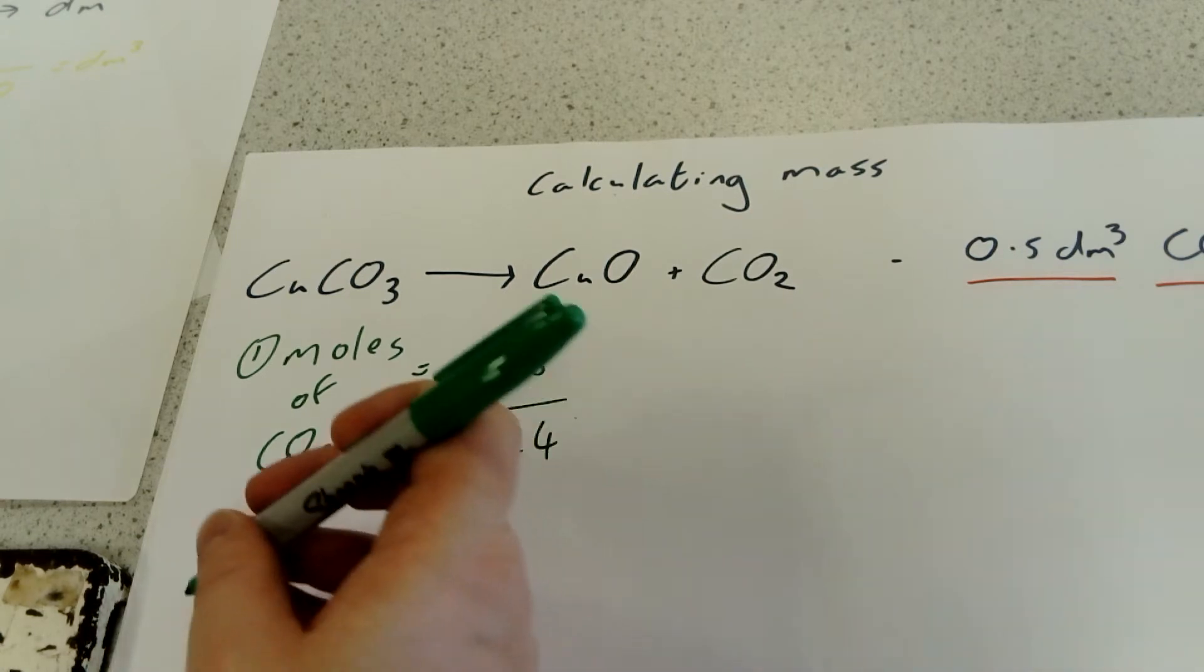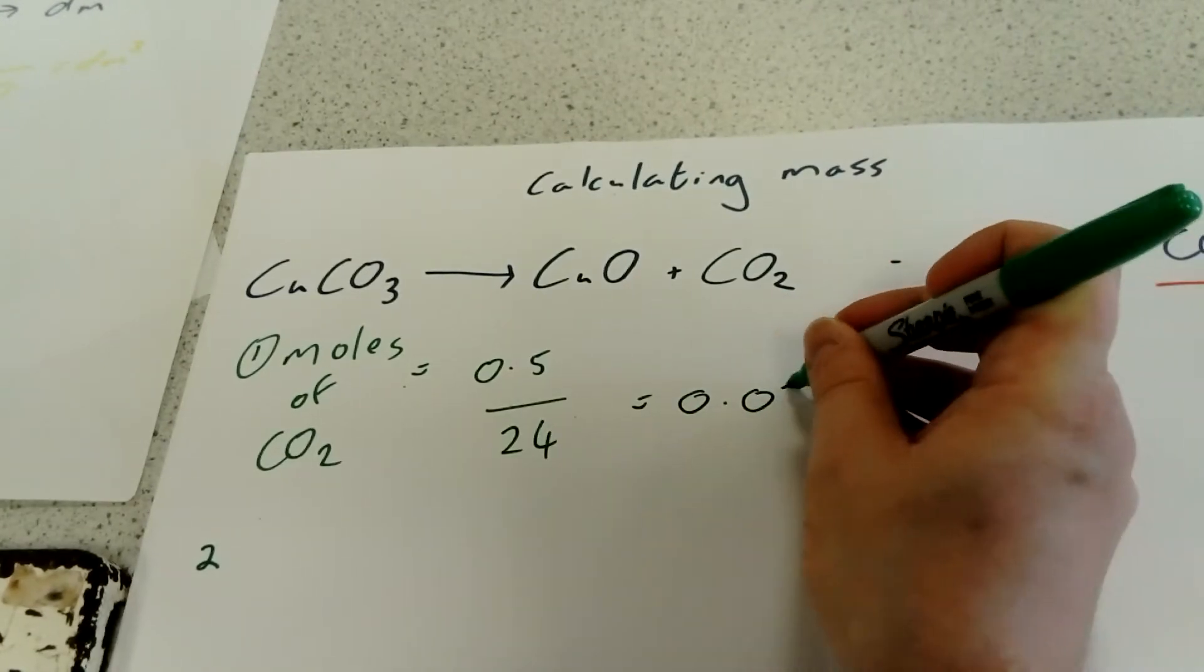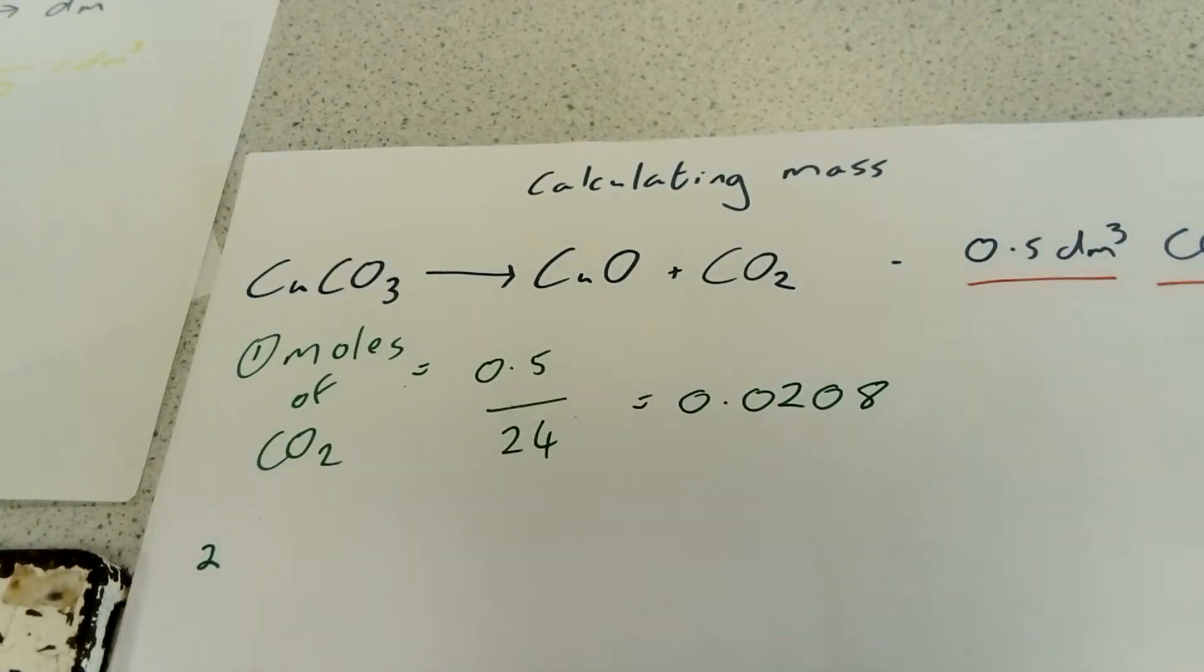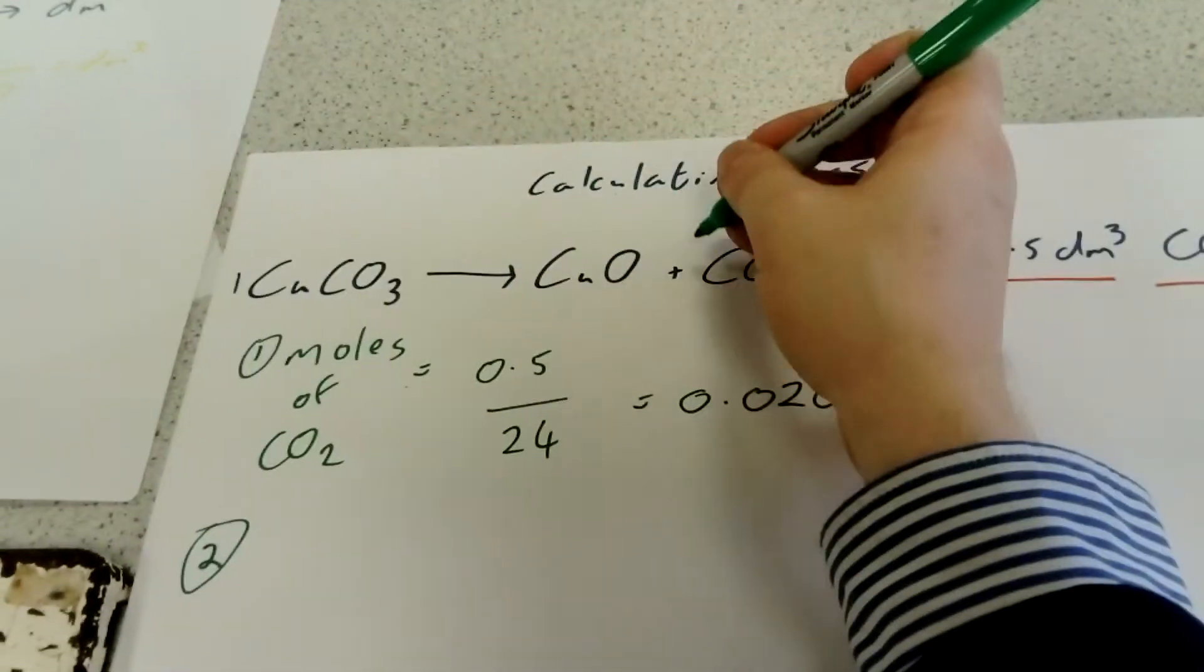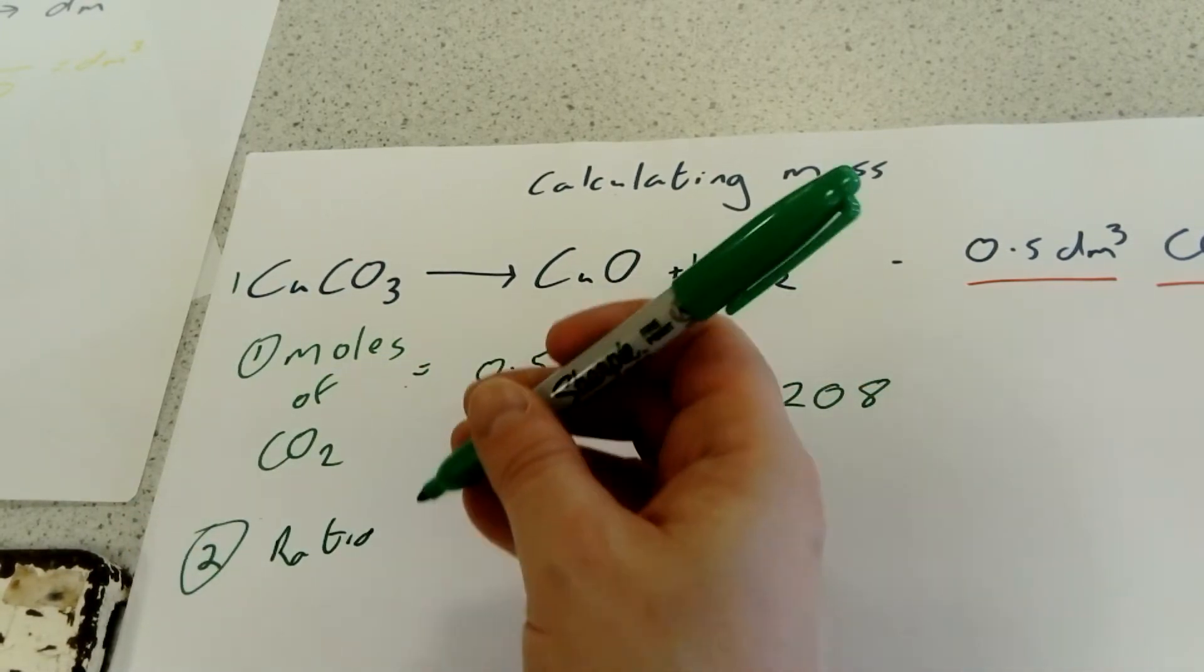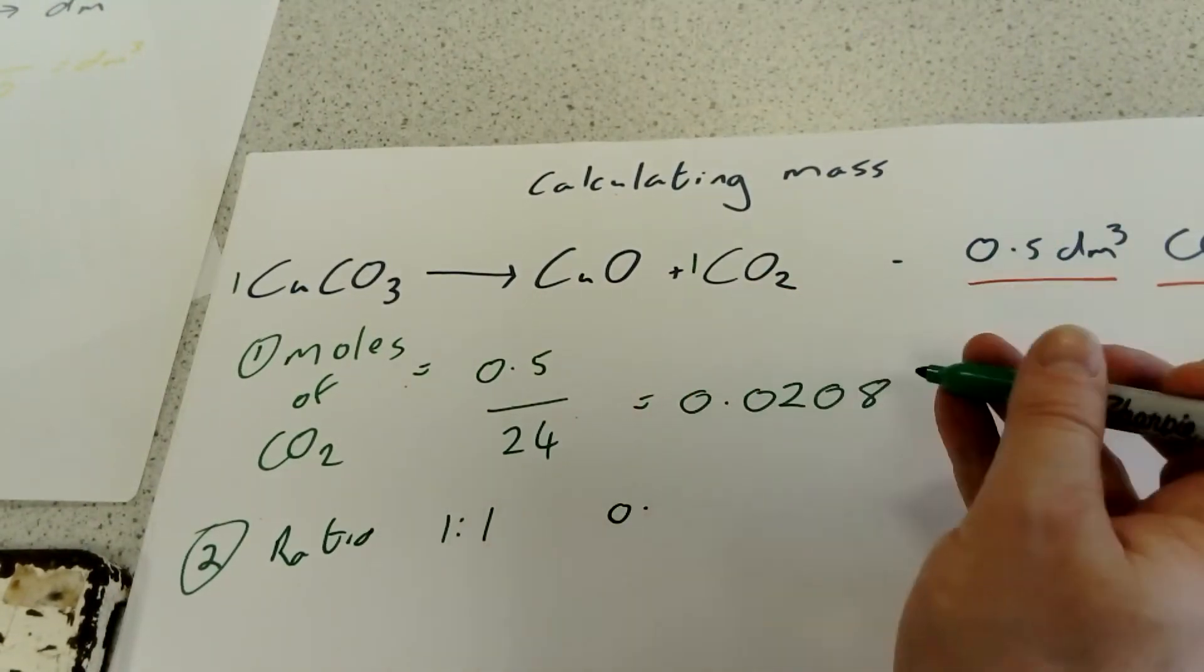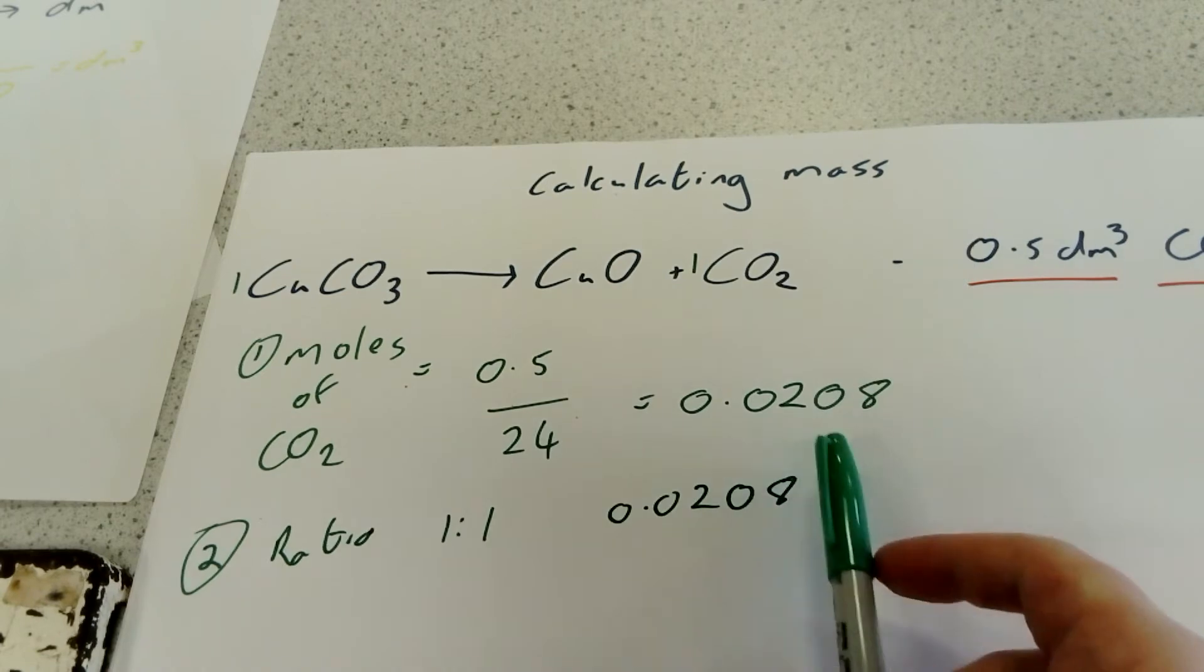After we work that out, that works out to be 0.0208. The second thing we'll do is look at our balanced equation and see how many moles of copper carbonate we need to make that. If we look at the ratio, it's basically a 1 to 1 ratio.